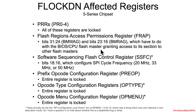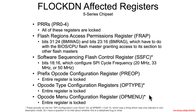The software sequencing register has a few bits that can be locked down, having to do with the SPI cycle frequency. Changing those could potentially lead to errors when talking to the SPI flash chip, so that's a good thing to lock down. There's also some other stuff about different opcodes that can or can't be sent to the flash chip when in software sequencing mode.